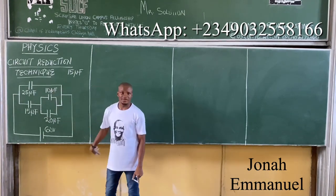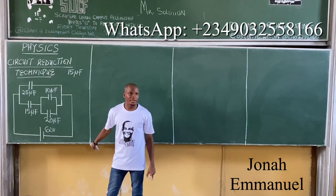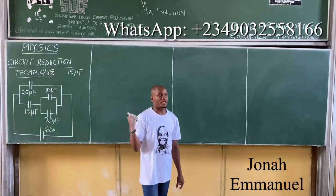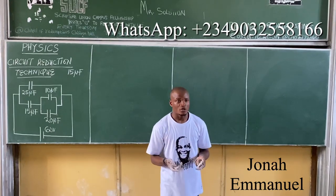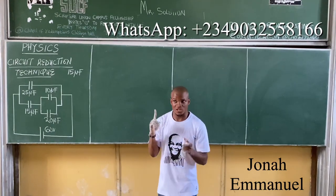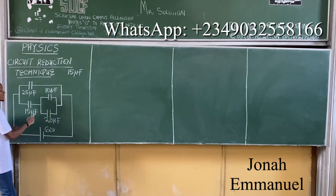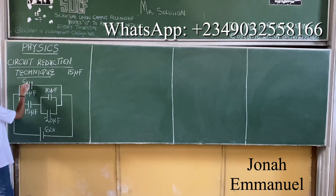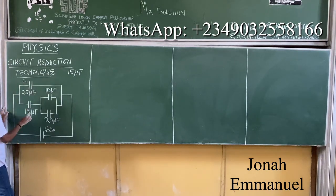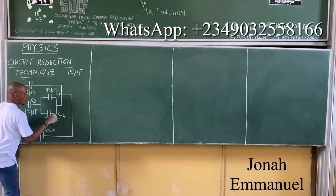Which of these are in series and which are in parallel? In this problem, we are not given C1, C2, C3, C4 — it's left for you to define them yourself. So let C1, C2, C3, and C4 be equal to the respective capacitor values shown. Which one do I start with?